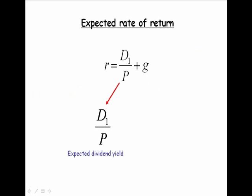The first part of our formula, D1 over P, is the expected dividend yield. It's an income yield, isn't it? It's showing an investor the percentage of the return, a percentage return, that is an income yield. G is the expected growth rate in dividends.